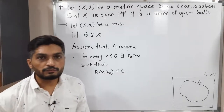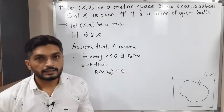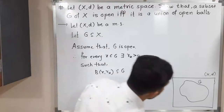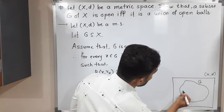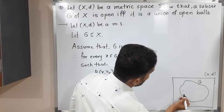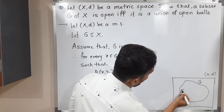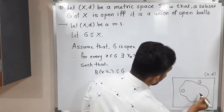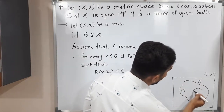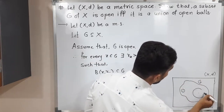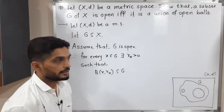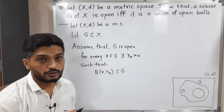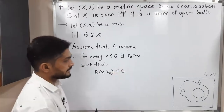You may be confused about what R_x means. It means that the radius depends on x. So if you select any point x here, you will have a ball like this which is contained in G. If you have a point near the center, then you can have a larger ball which is a subset of G. The radius of that ball depends on that point, so we call it R_x.